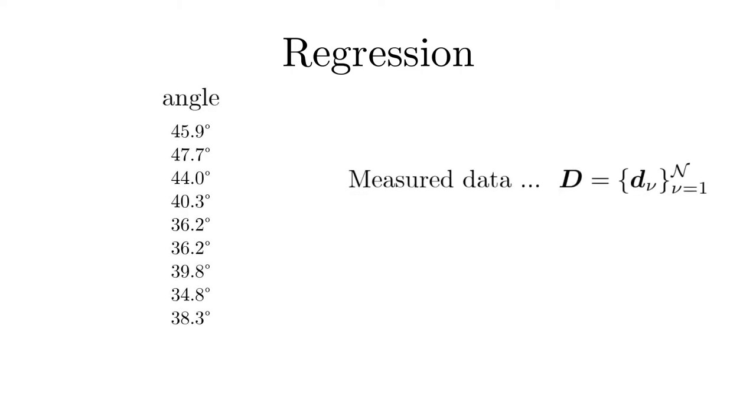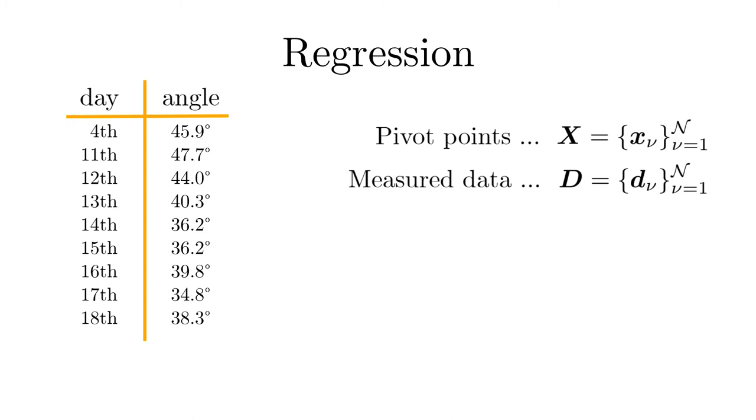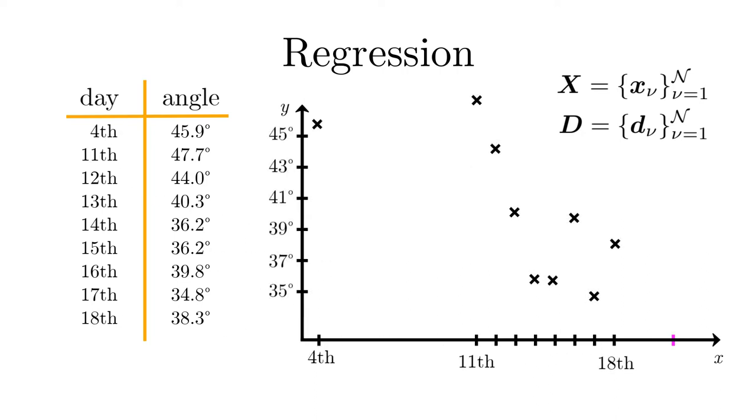We begin with the classical regression problem. Let there be a set of measured data that depend on some pivot points. These data points can be represented in an xy diagram. The measurements are in general not exact but have some uncertainty that obey a certain distribution.